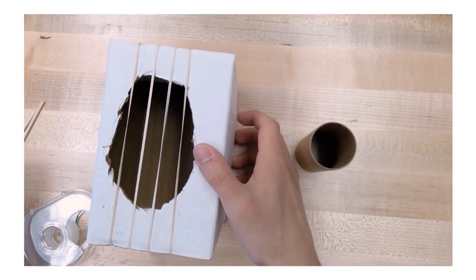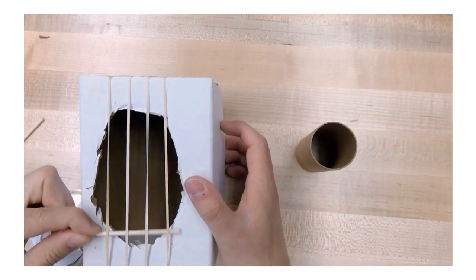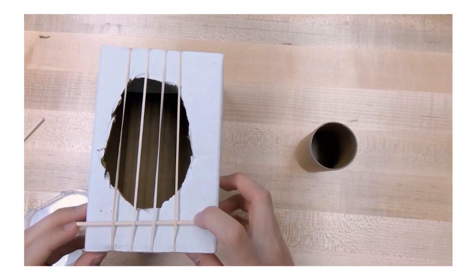Slide the wooden dowels under the rubber bands near the edges of the box. Angle one dowel, as this helps each band make a different sound.